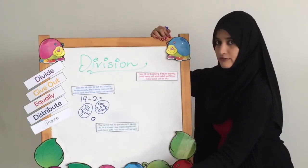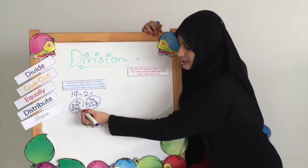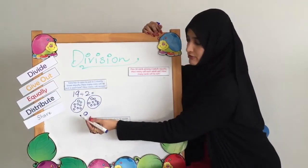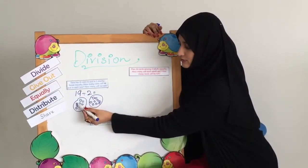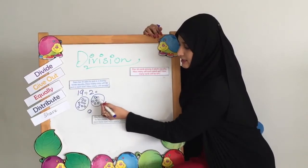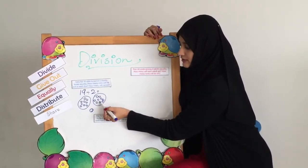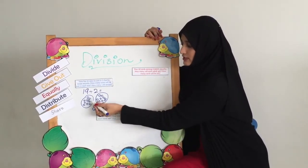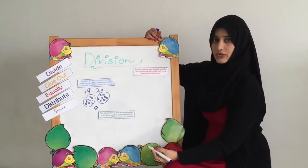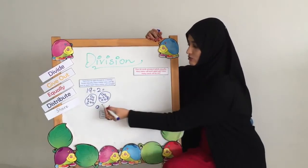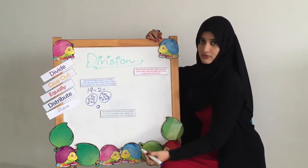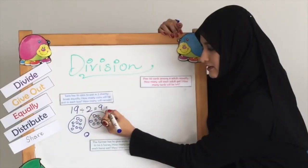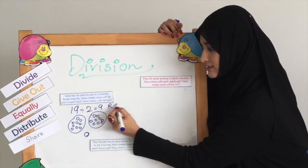We need to check if the distribution is equal and if both boxes have an equal number of coins. 1, 2, 3, 4, 5, 6, 7, 8, 9. And the other box: 1, 2, 3, 4, 5, 6, 7, 8, 9. So these 2 boxes have 9 coins each and there is 1 coin that is the remainder. 9, and the remainder is 1.